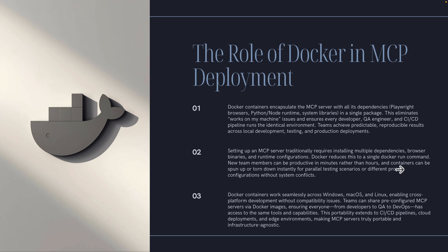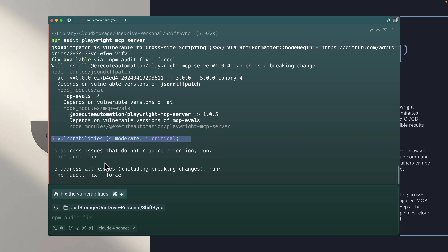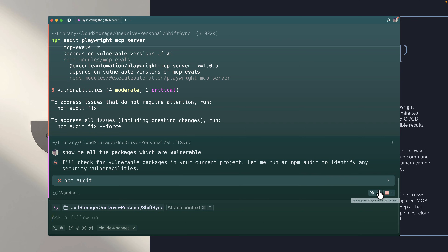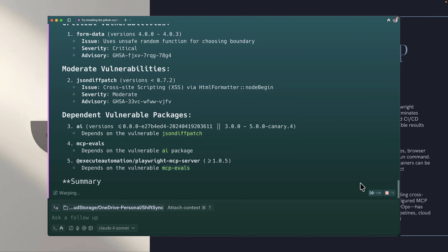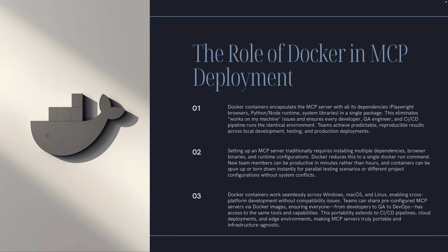The role of Docker in MCP deployment is that if you're going to be working with a Model Context Protocol server in an organization, there are so many security implications — if you're just using an npm package hosted publicly, you can't use it directly within your organization. The power of Docker is that it encapsulates the MCP server with all its dependencies. For example, if you're running the Playwright MCP server, the Playwright browsers, Python, Node runtimes, and system libraries are all encapsulated inside one single Docker container, and you can build all of these with no vulnerable packages. This also eliminates the 'works on my machine' issues.